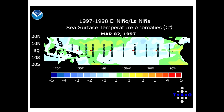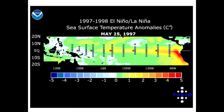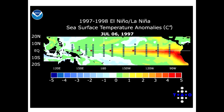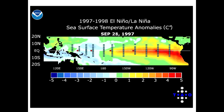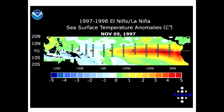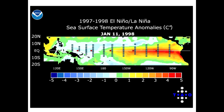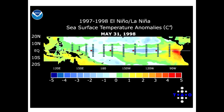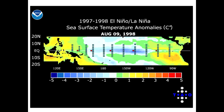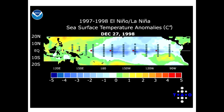In this animation of the equatorial Pacific Ocean, the red colors show the strong El Niño warm event in the eastern Pacific, followed by a strong La Niña cold event, indicated by the blue colors.